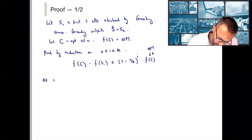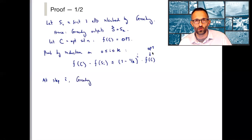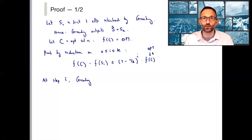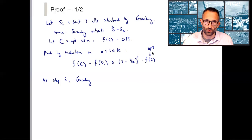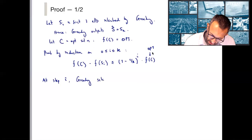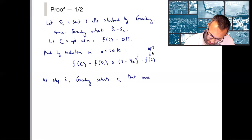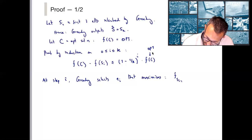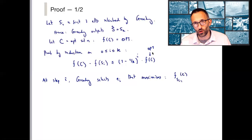At step i, greedy simply selects the element e_i that maximizes the marginal value with respect to the set S_{i-1}. Because we have the uniform matroid, every element until the K-th step is always a candidate to be added, so we don't need to worry about feasibility checking. Formally, e_i is the argmax over all e in the ground set but not in S_{i-1} of F_{S_{i-1}}(e).